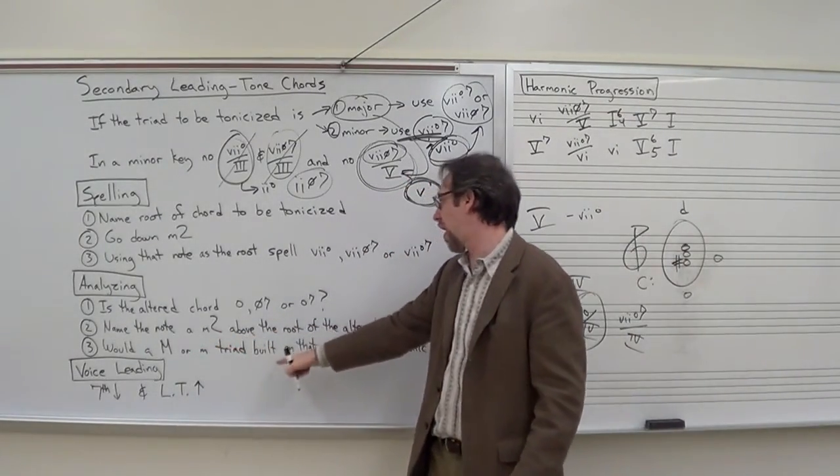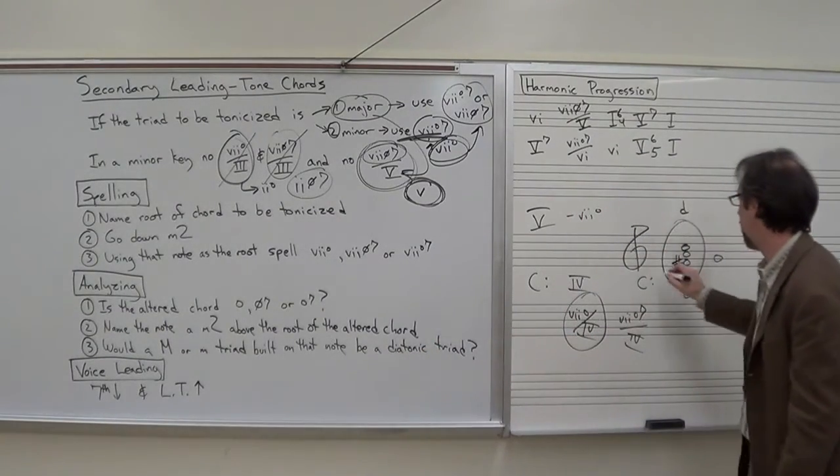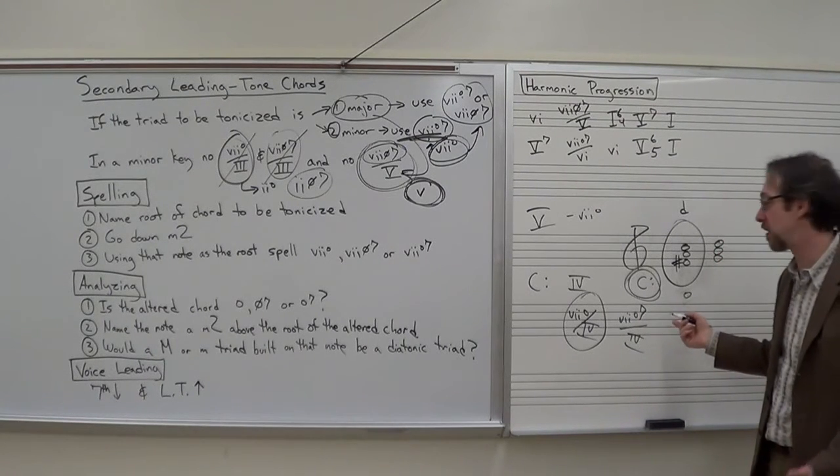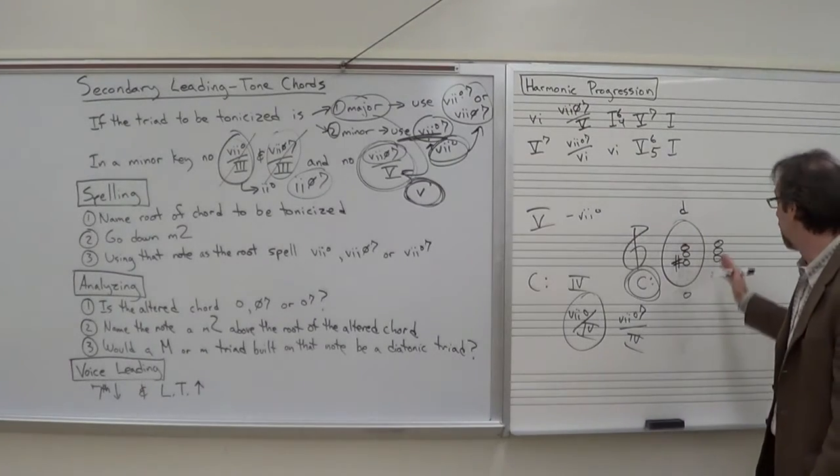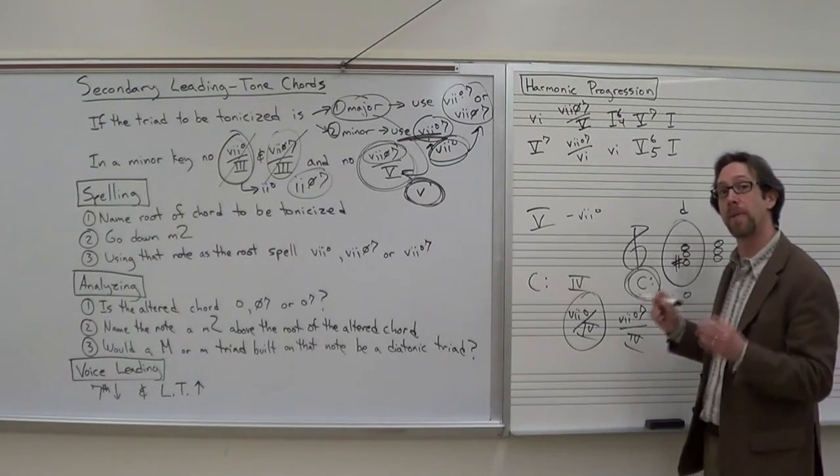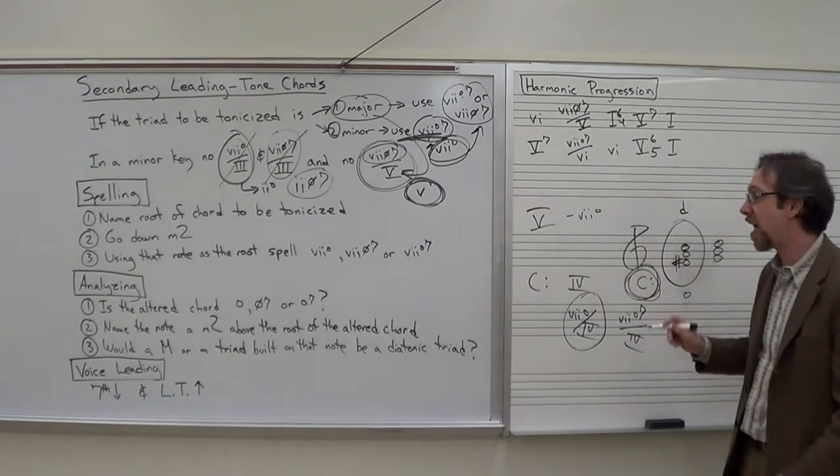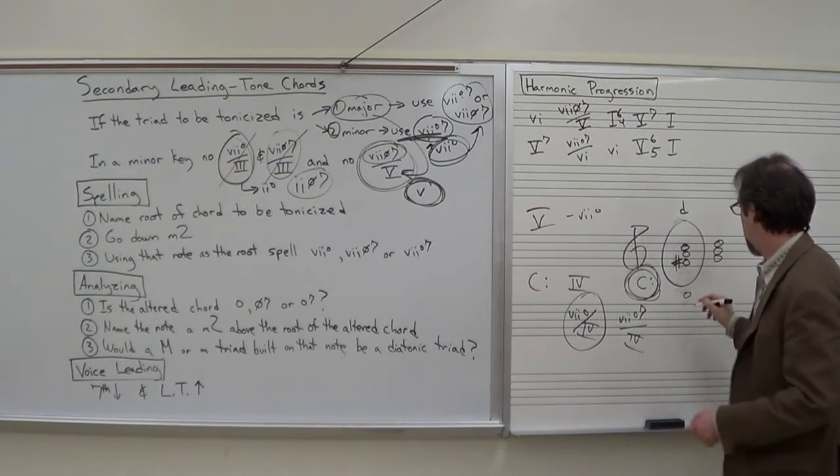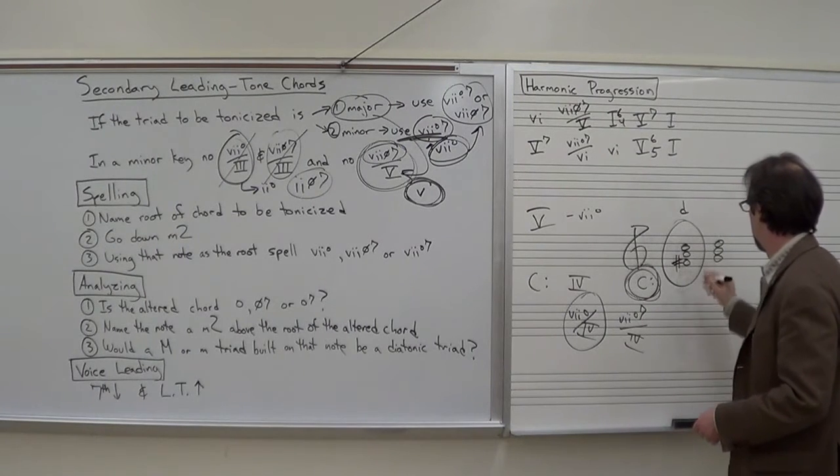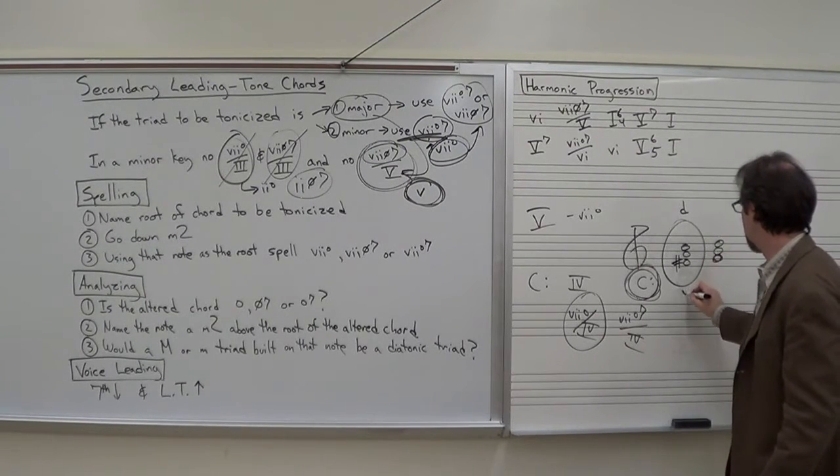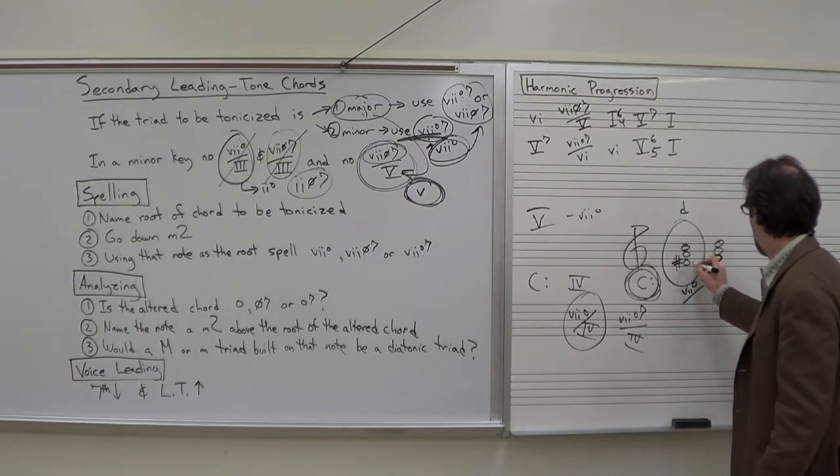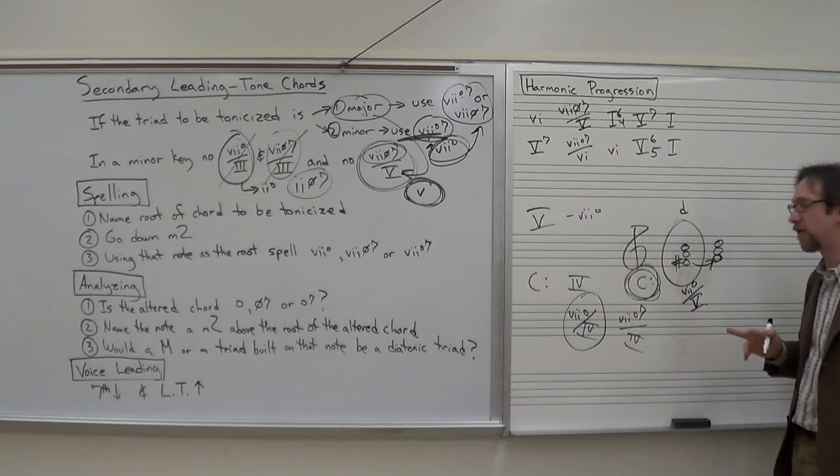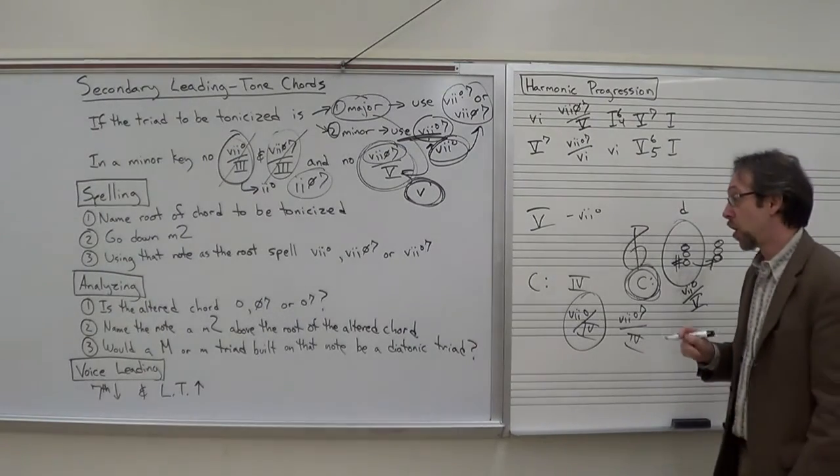Would a major or minor triad built on that note be a diatonic triad in our key of C major? If we built a G major triad, that would be a 5 chord in the key of C major. G minor is not an option, but it doesn't matter. As long as one of those, either a major or a minor triad is diatonic in your home key, then you can answer yes, this is a secondary leading tone chord. The F sharp is a half step below the G, so it is a 7 diminished triad of 5.